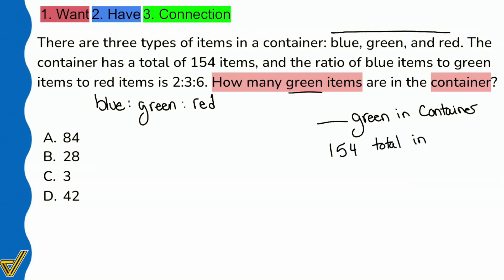We see that these two pieces of information are connected: green is what we're looking for in the container, and we have 154 total in the container. This is going to be super important because we want to set up our proportion based on the question and the information connected to the question.